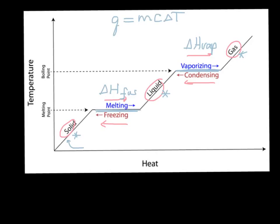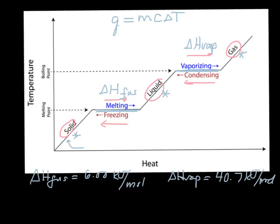These are obviously different for different substances, but the heat of fusion for water is 6.00 kilojoules per mole. That means it takes 6 kilojoules to melt one mole of ice. The heat of vaporization is 40.7 kilojoules per mole. That means it takes about 40.7 kilojoules to turn one mole of water into steam.